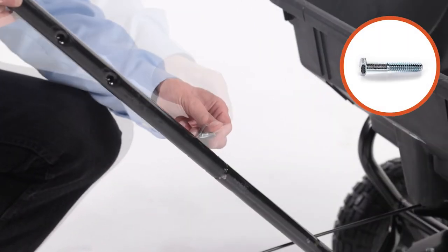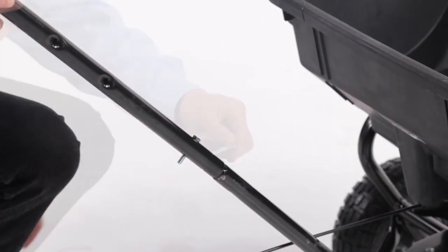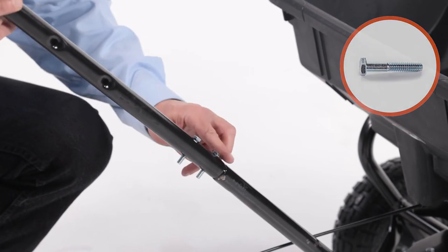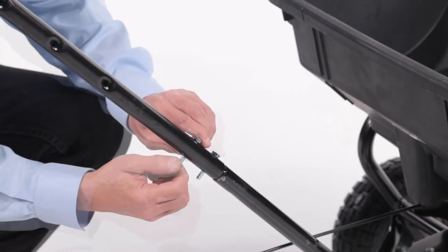Next, align the handle tube, Part V, and fully secure it with two 1⁄4-inch bolts, Part C, and two 1⁄4-inch nylock nuts, Part F.